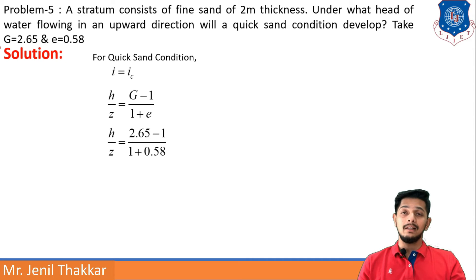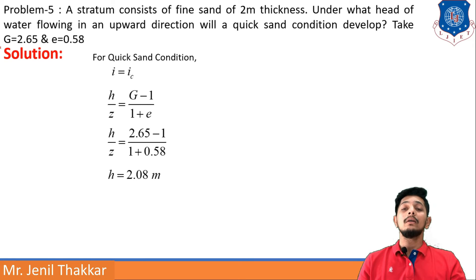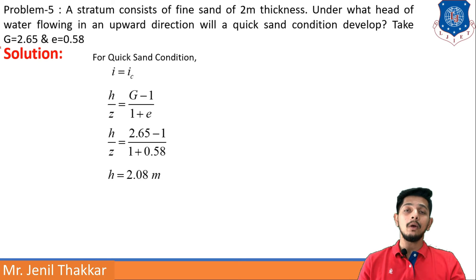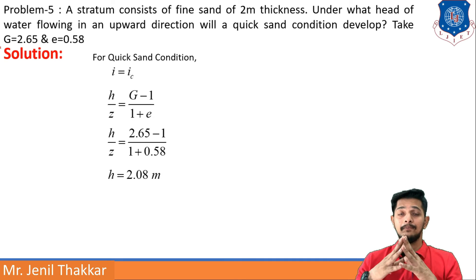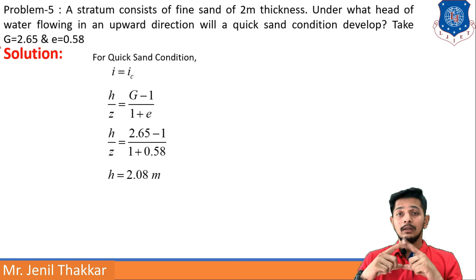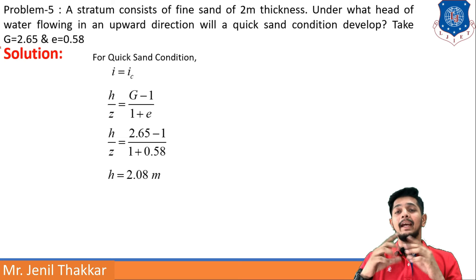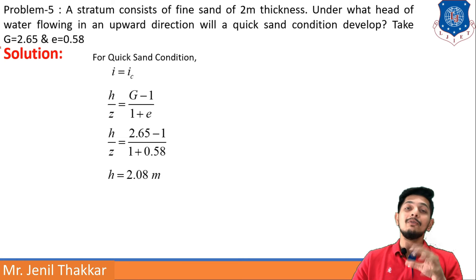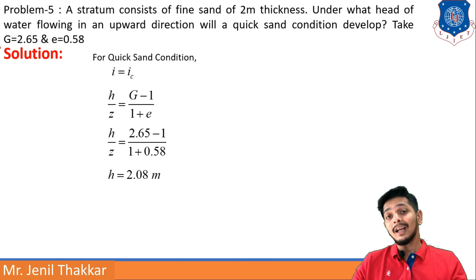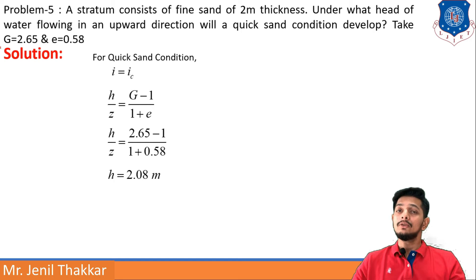h/z is to be found; G, e, and z = 2 m are provided. Putting all values, h = 2.08 m. This means if the head of water rises to 2.08 m, the sand will start boiling and quick sand condition will begin occurring on the field.